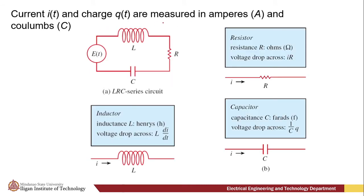Current i(t) and charge q(t) are measured in amperes and coulombs. Consider a single-loop series circuit shown in this figure containing an inductor, resistor, and a capacitor. The current in the circuit after the switch is closed is denoted by i(t). The charge on the capacitor at time t is denoted by q(t). The letters L, R, and C are known as inductance, resistance, and capacitance respectively. Here, we can see the relationship of our current i that passes through resistor, capacitor, and our inductor.